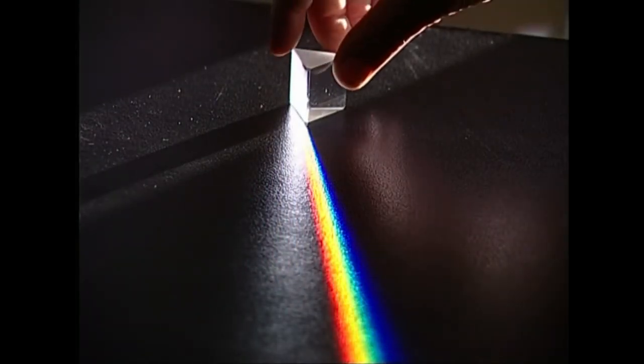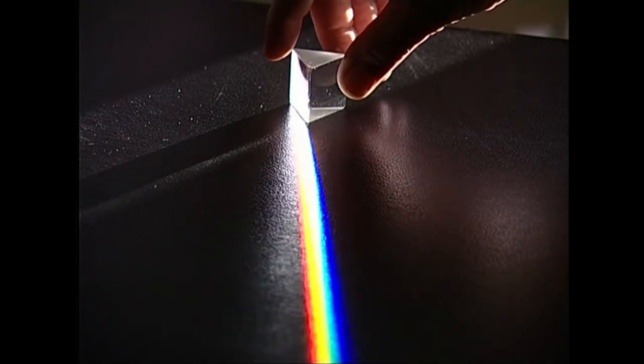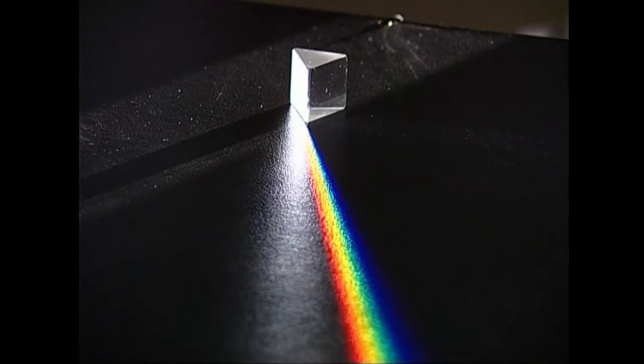Eguzkiaren argi zuria, prisma optiko bat zeharkaraziz banandu egin daiteke. Hori egiten denean, kolore sorta agertzen da gure begien aurrean. Sorta horren mutur batean, urdin hilunan abarmentzen da eta beste muturrean gorria. Espektroaren bi muturrak elkartzen baditugu, bi koloreren batzegunetan kolore berri bat sortzen dela ikus daiteke. Irudioni, zirkulu kromatikoa deritzo.